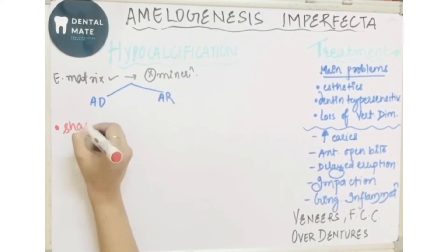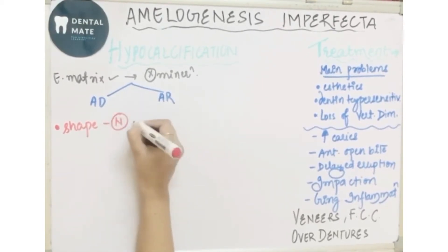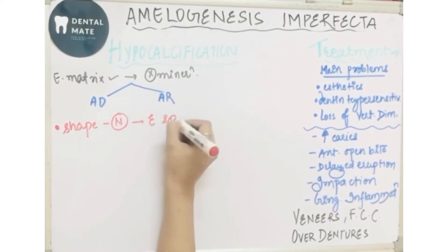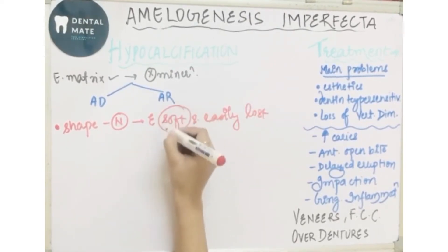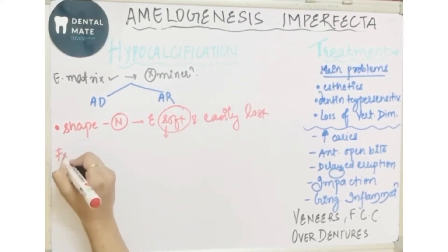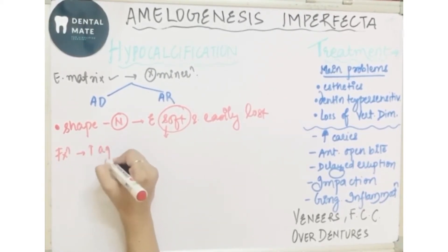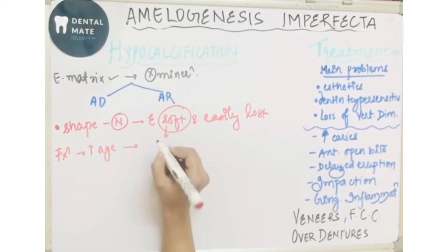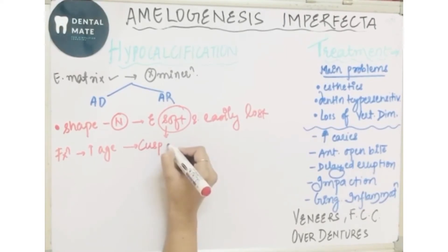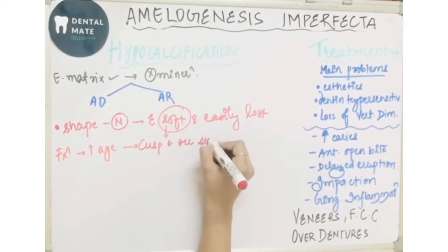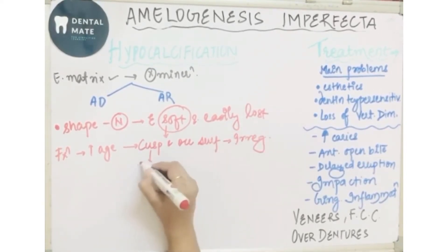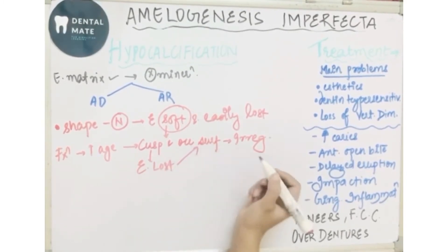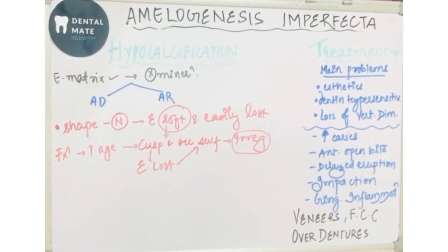Generally, the shape of the crown is normal but the enamel is very soft and easily lost. Because of this soft enamel, with function and increase in age, the enamel is lost from the cuspal region and the occlusal surface becomes irregular. The shape of the tooth is normal, but the cuspal region and occlusal surface become irregular.